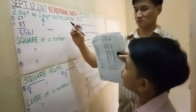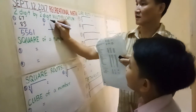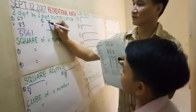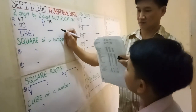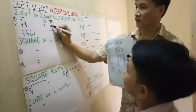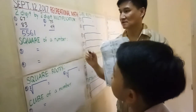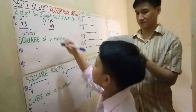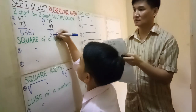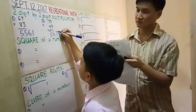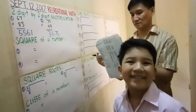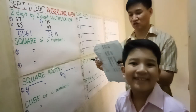Number 2. 75 times 49. Answer: 3, 6, 7, 5. That's correct. Good job.